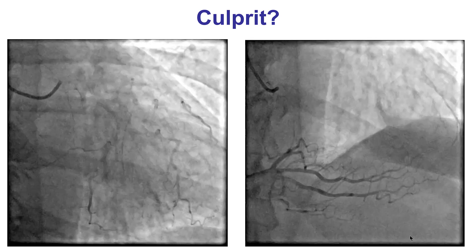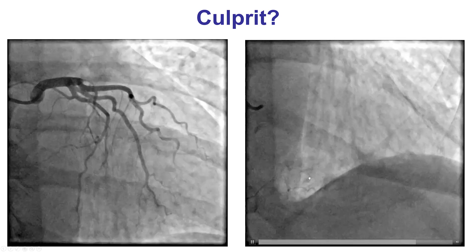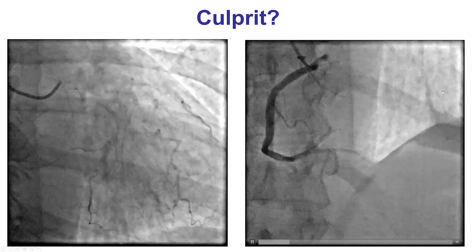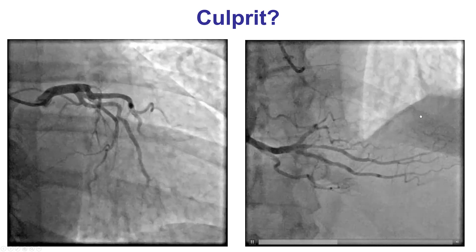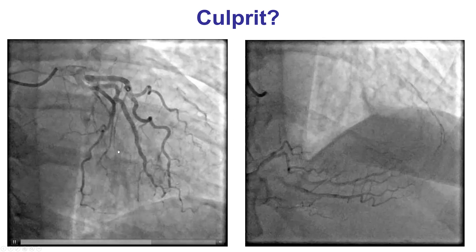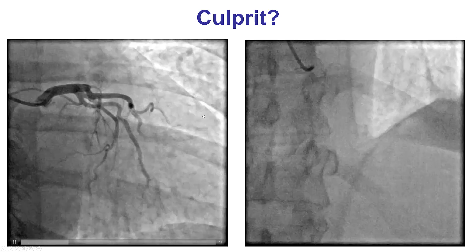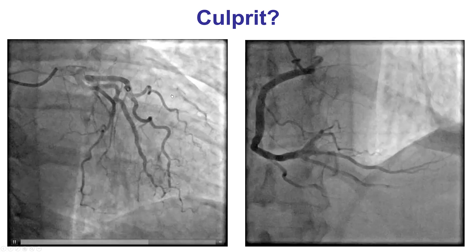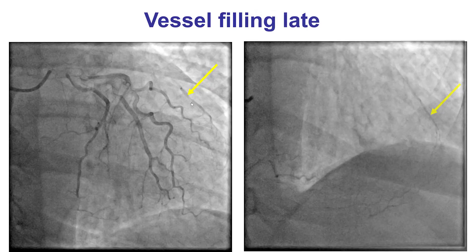Angiography showed a patent right coronary artery without any significant stenosis. However, there was a filling of a vessel on the lateral wall. The LAD was patent, as was the circumflex, but once again there is a vessel on the lateral wall of the heart that is filling late via collaterals.